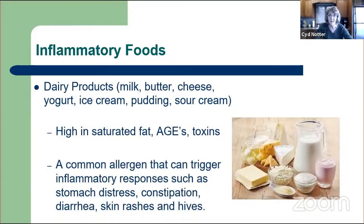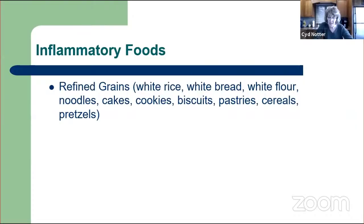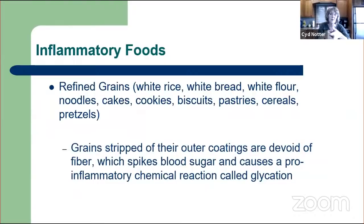The next inflammatory foods are refined grains. We know whole grains are very health-promoting, but refined grains such as white rice, white bread, white flour, certain noodles, cakes, cookies, biscuits, pastry, cereals, and pretzels are inflammatory because those whole grains have been stripped of their outer coatings where all the fiber and nutrition lives. Once stripped down, they're devoid of fiber, which spikes blood sugar and causes the pro-inflammatory chemical reaction called glycation.